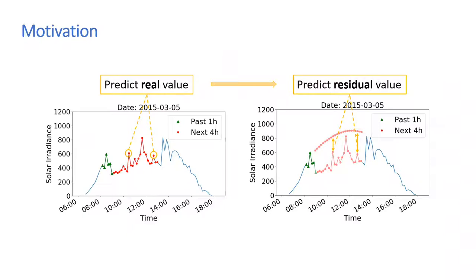Therefore, our idea is that instead of predicting the real solar irradiance directly, we propose to learn the residual solar irradiance relative to the value on clear days by using a clear sky model.